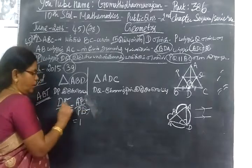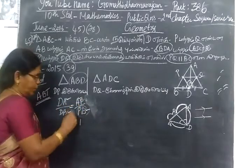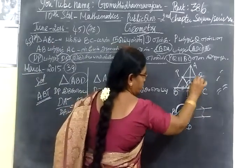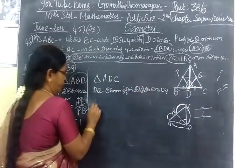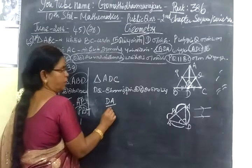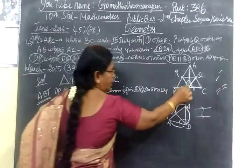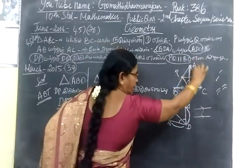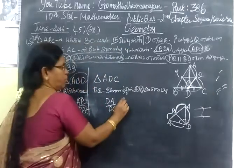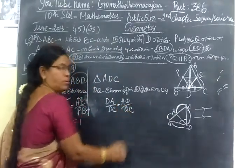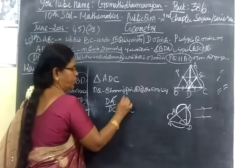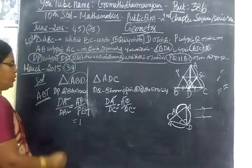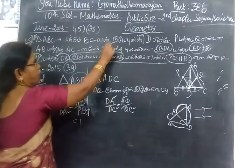When you write, try to write this down, repeat this, remove this. Then DA by DC. Then DA by DC. So, A to Y to C. Then DA by DA. Then C by C. So, C to C.